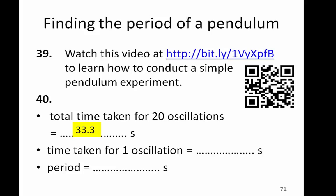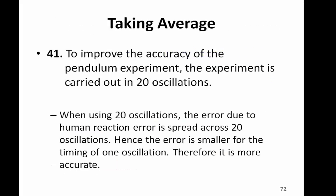The total time taken for 20 oscillations is 33.3 seconds. So what is the time taken for one oscillation? We divide 33.3 by 20, that gives you the period of 1.67 seconds. So we use 20 oscillations in our pendulum experiment to improve the accuracy of this experiment.